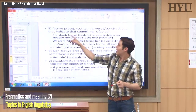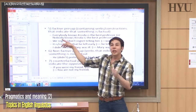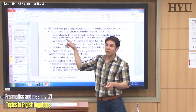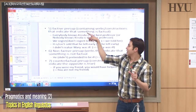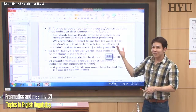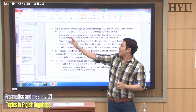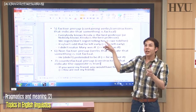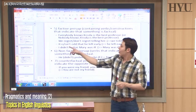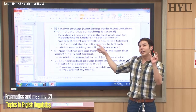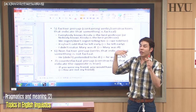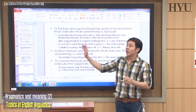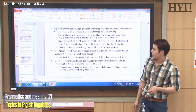'Everybody knows Chris Da is the best professor at Hanyang' — or even if you negate it, 'nobody knows Chris Da is the best professor' — it doesn't matter; the presupposition is still that Chris Da is the best professor. 'We regret or we don't regret telling her' — either way it already means you already told her. 'It is odd that he left early' — the fact that he left early is already presupposed. 'I didn't realize Mary was ill' — whether you realize it or not, Mary was ill.